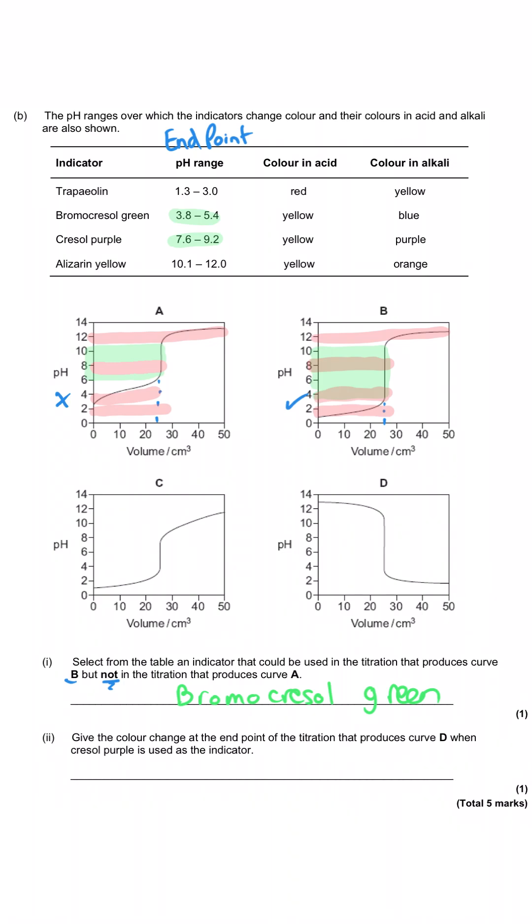Then the question says, give the colour change at the end point of the titration that produces curve D when Cresol purple is used as an indicator. And so Cresol purple has got two colours. It's got yellow and purple. And so we are saying what the colour change is when that indicator changes colour. And so what we need to note is that we're starting high. And so the Cresol purple at the beginning of the titration will be purple. And then it will still be purple, still be purple, still be purple. Then we get that rapid pH change and it drops to about pH two and a half three. And so it will change from purple to yellow. When you've been asked for the colour change, you must say both of the colours, the starting colour and the finishing colour.